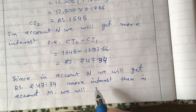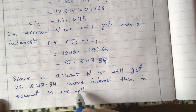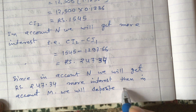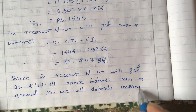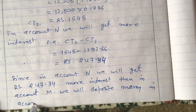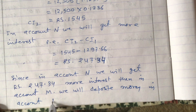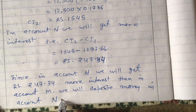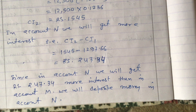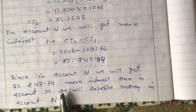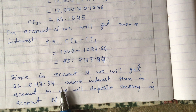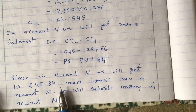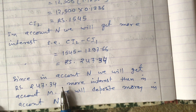We will deposit money in account N. In this way we can calculate this type of question. In five-mark type questions you will get long questions like this — not only from compound interest, but sometimes from rate and that chapter, or sometimes from money and exchange as well. You need to practice those also. Thank you for watching this video.